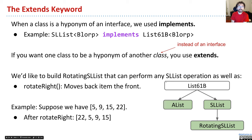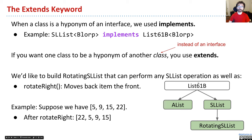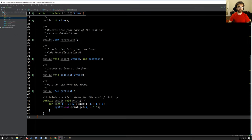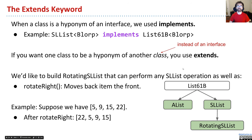So we saw last time that when a class is a hyponym of an interface, we used implements. For example, an SList is a List61B, and this is an interface. In that case, we used the implements keyword. What implements means is we're declaring that we are indeed lists, and we will implement all the methods that List61Bs require. I claim to be a list — I better be able to give someone add operations, remove operations, and so forth. And maybe along the way, I'll pick up a couple default methods from the interface. In the List61B case, we had a print method. But mostly, it's about interface inheritance.